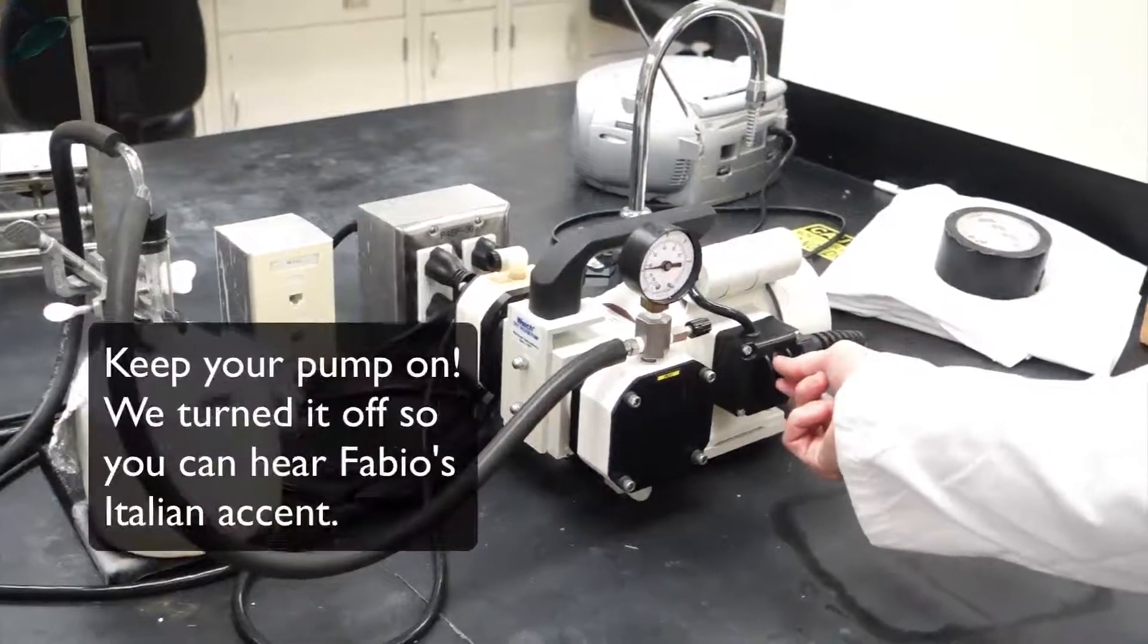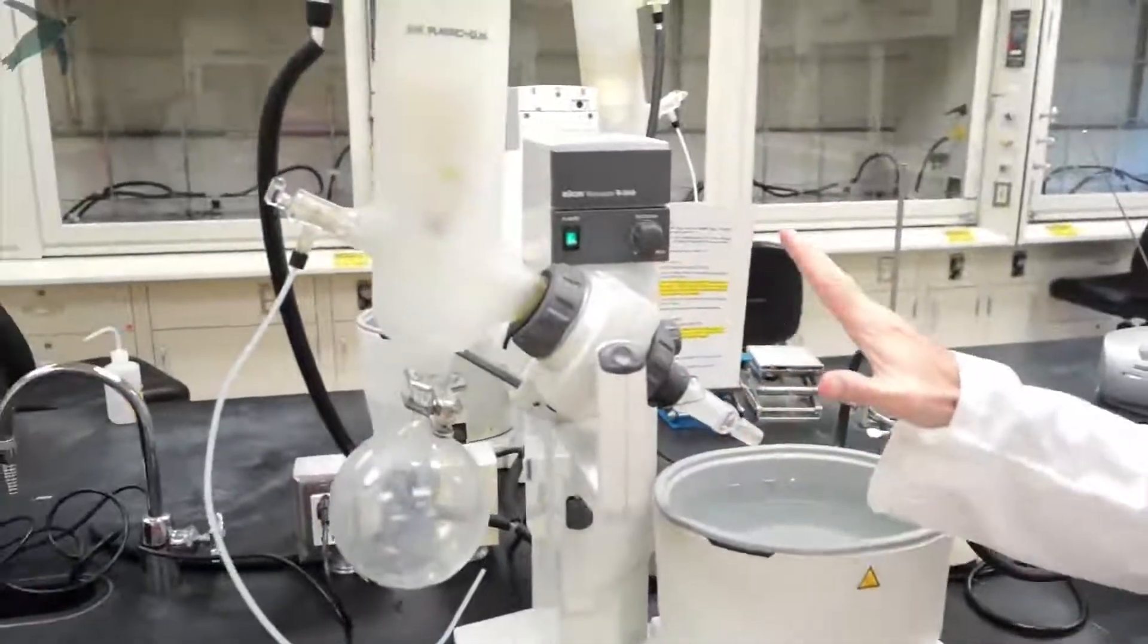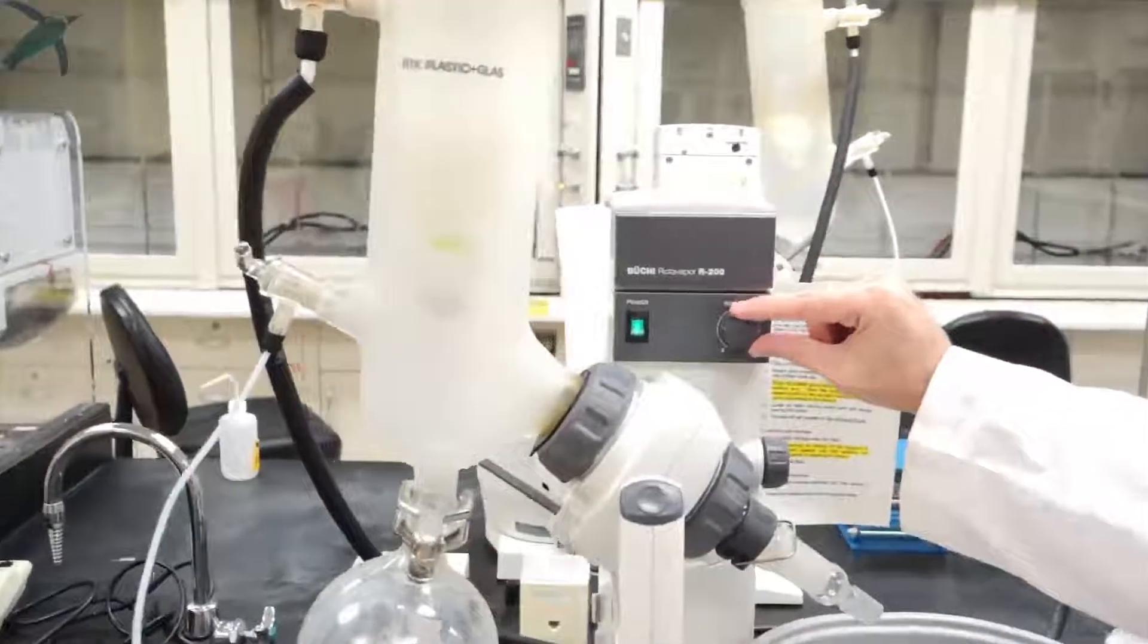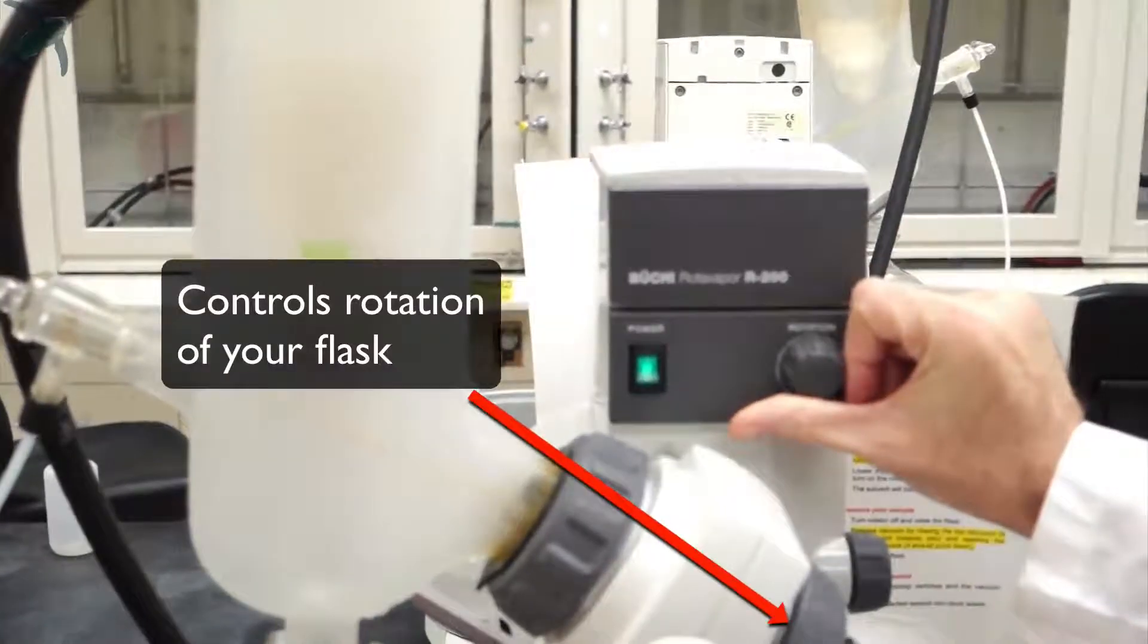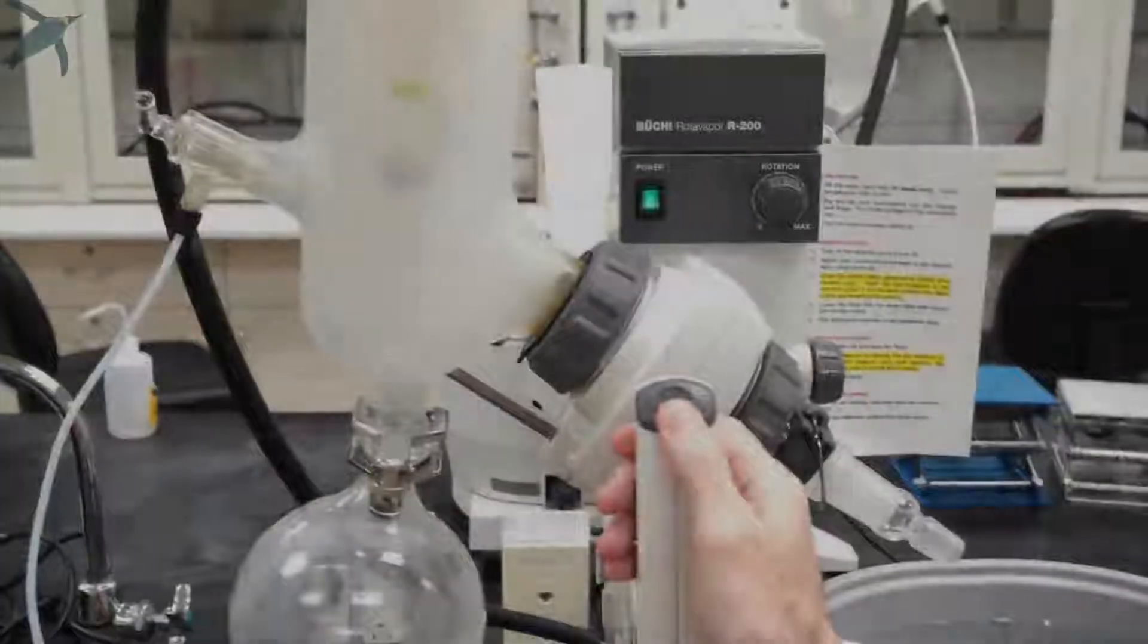Now we are turning the pump off for video purposes. The Rotavapor has three main controls: a rotation control knob, an up and down switch,